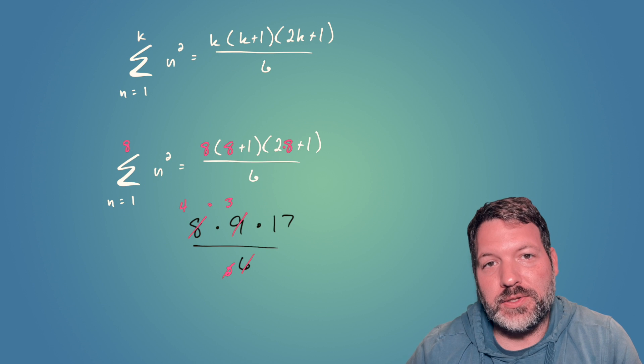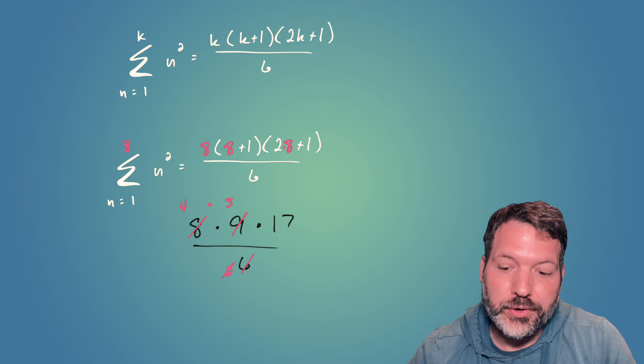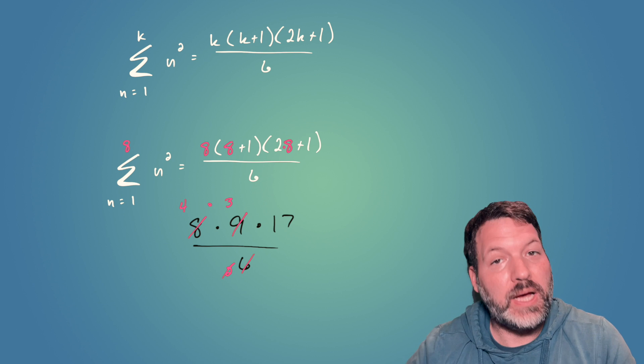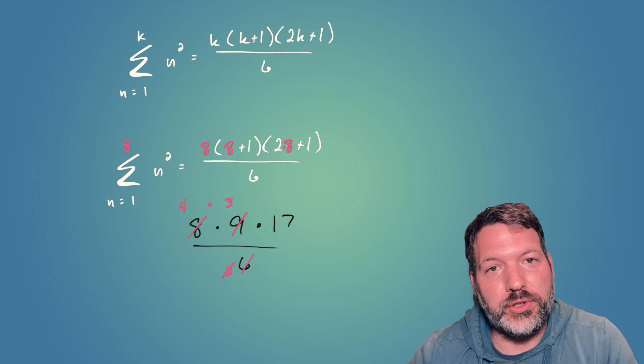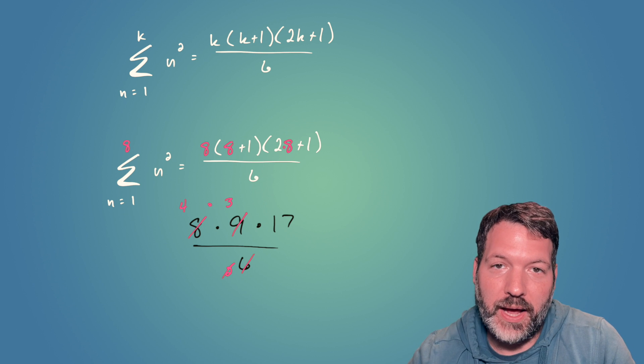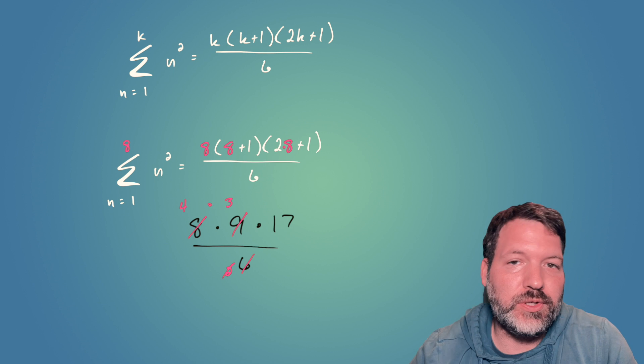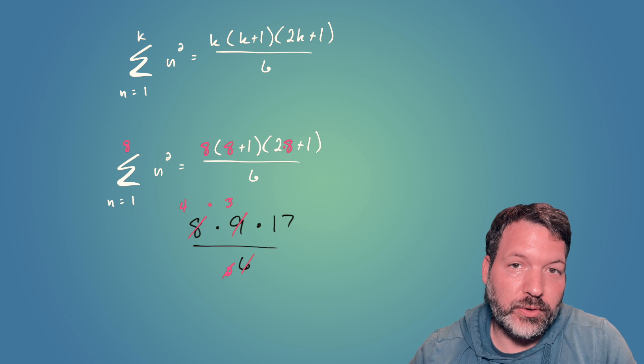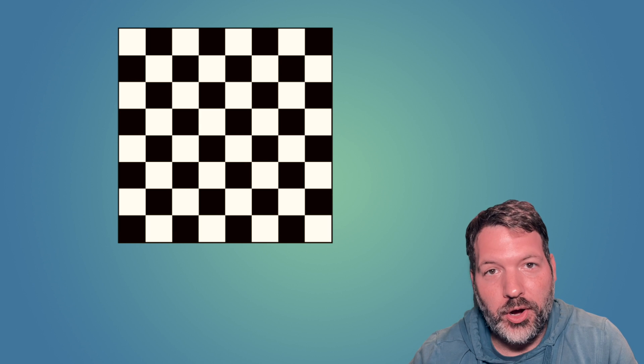If you're doing contest math, chances are you know there is a formula that will compute the sum of consecutive squares for you. It ends up looking like this up here. Here, k times the quantity k plus 1 times the quantity 2k plus 1, all divided by 6, when k is the largest consecutive square that you want to add together. In the case of k equals 8, you can see that that simplifies down to, essentially, 4 times 3 times 17, and that works out to 204. So for our classic chessboard problem, we can say an 8x8 chessboard has a total of 204 squares on it.